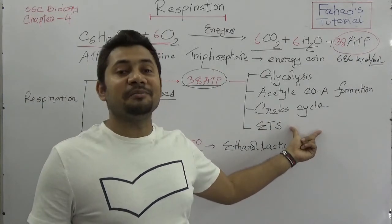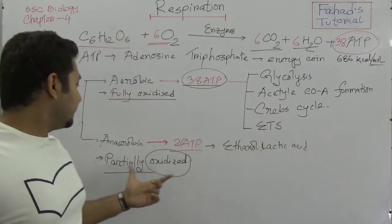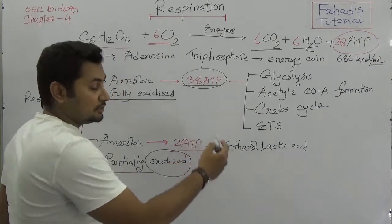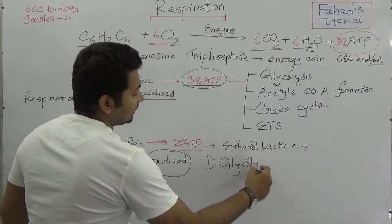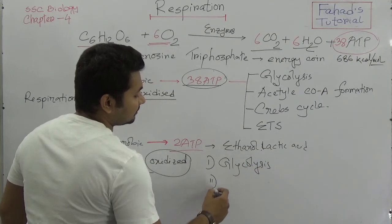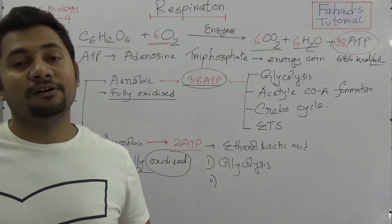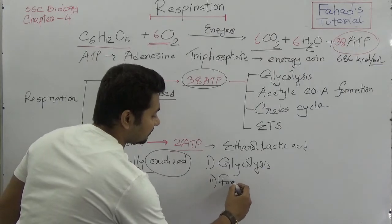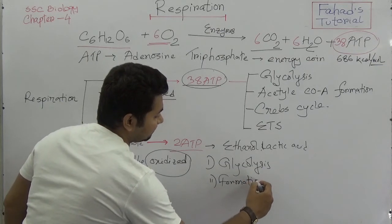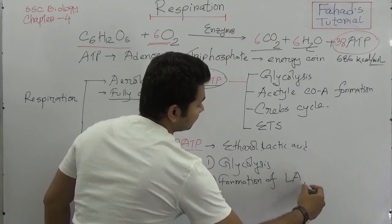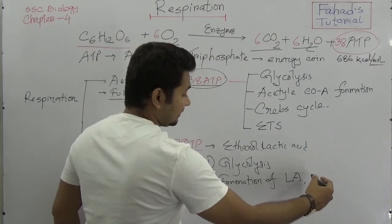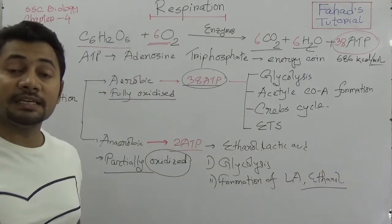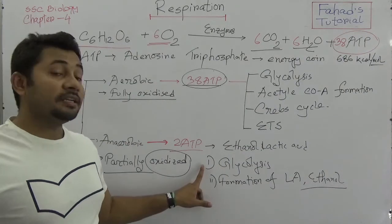In total, 38 ATP will be produced through aerobic respiration after the electron transport chain. For anaerobic respiration, there are two steps: number one is glycolysis, and number two is the formation of lactic acid or ethanol. This is the last step of anaerobic respiration.